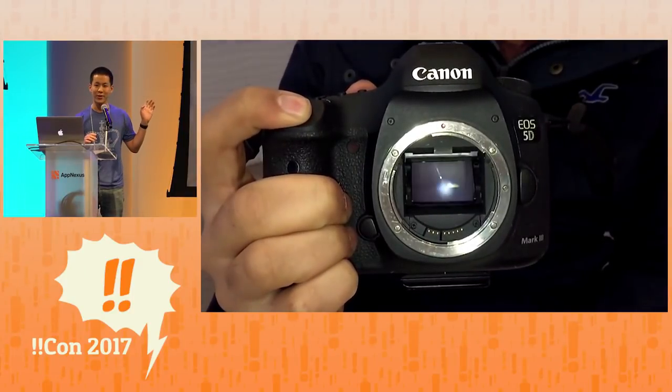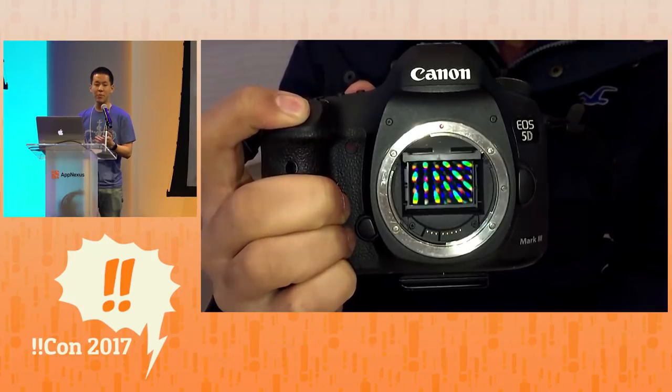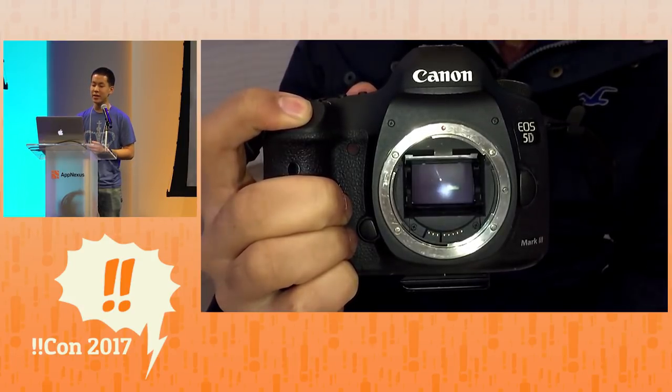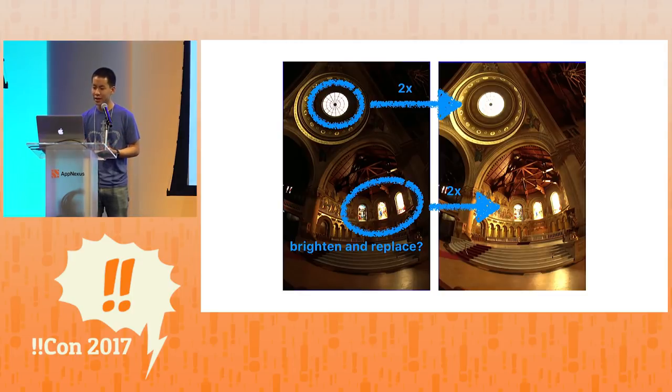This is a shutter, and it opens and closes to let in light. Now, the longer this shutter is open, the more light is going to come in. And this principle is called reciprocity. So if we open the shutter for twice as long, we're going to let in twice the amount of light into our camera.